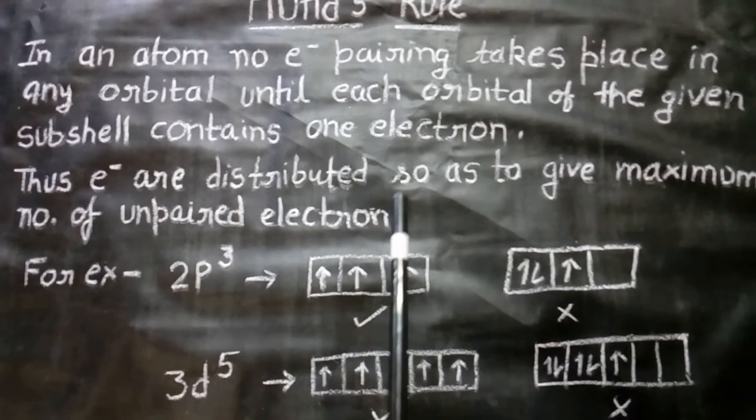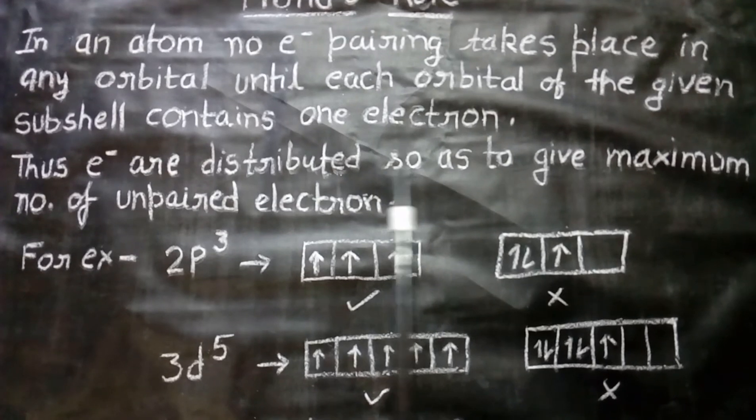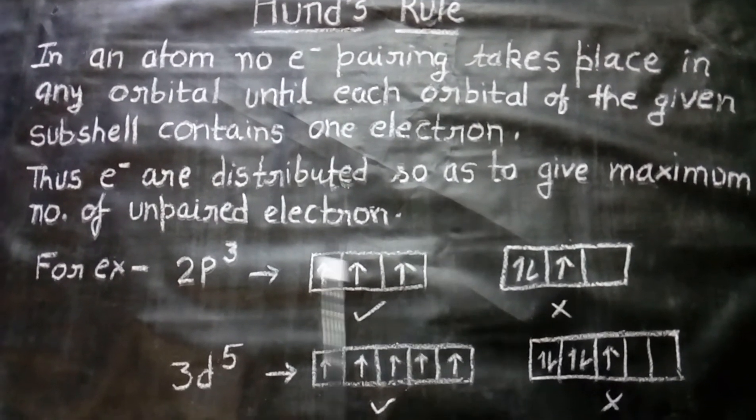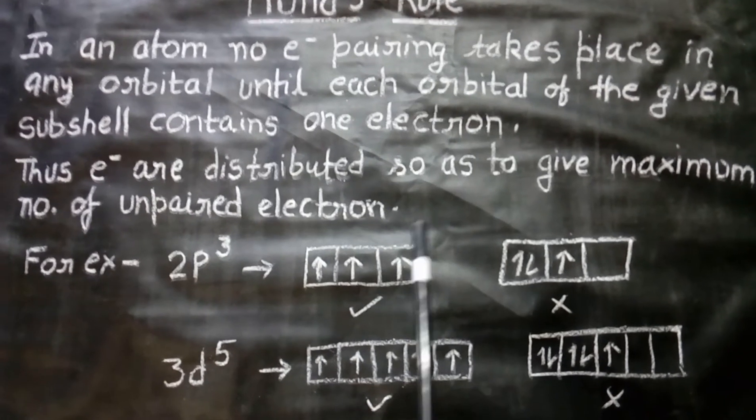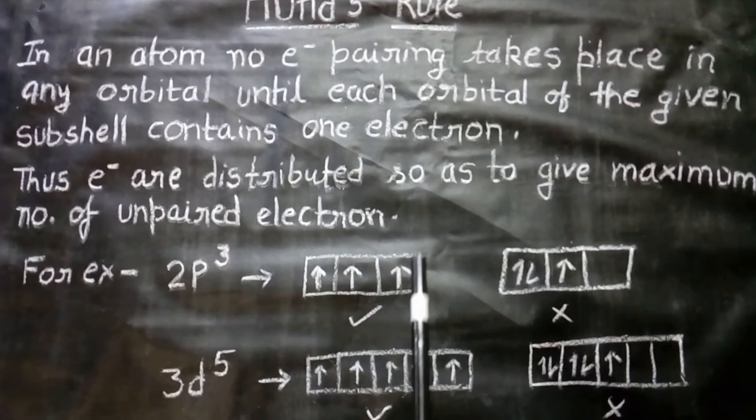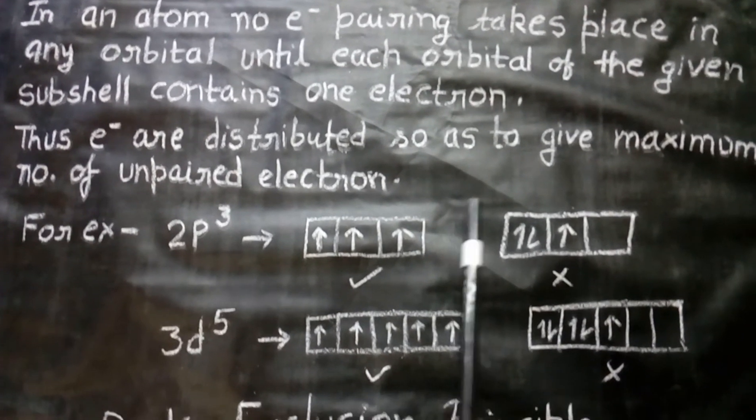It means electrons firstly enter all the orbitals of a given sub-shell, then the pairing of electrons takes place. Thus, the electrons are distributed so as to give maximum number of unpaired electrons. It means the spin multiplicity will be maximum.